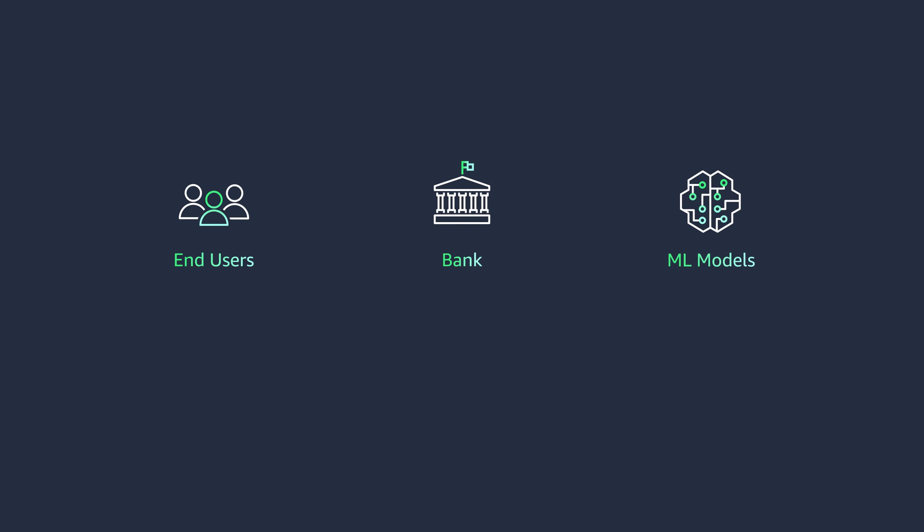Customers often have a hard time figuring out the best deployment strategy because every use case has different requirements like latency, throughput, and payload size. Let's look at a real-world scenario and decide which option is the best. Say you have a banking customer working on a fraud detection project where they wanted to deploy a binary classification XGBoost model, already trained on their labeled dataset, to quickly predict whether a transaction is fraudulent or not.